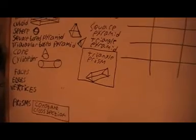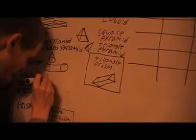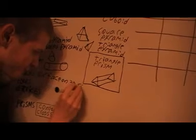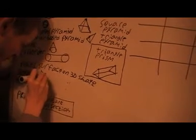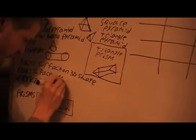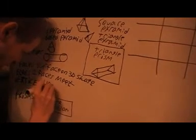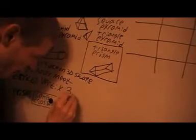We won't actually need those. Let's look at faces, edges, and vertices now. The face is a surface on the shape. Edges are where two faces meet. And the vertex is the name for just one corner — it's where three edges meet.